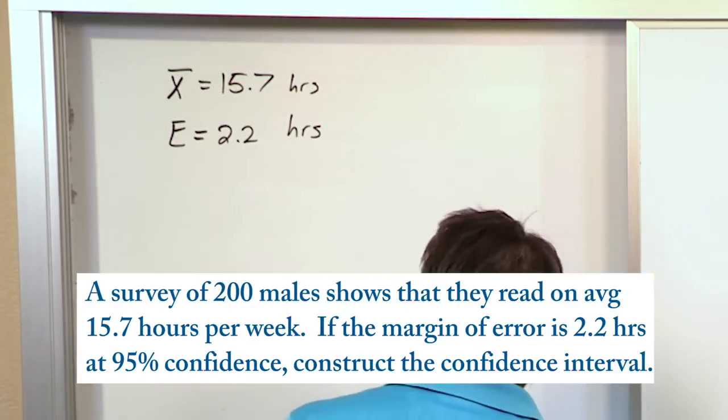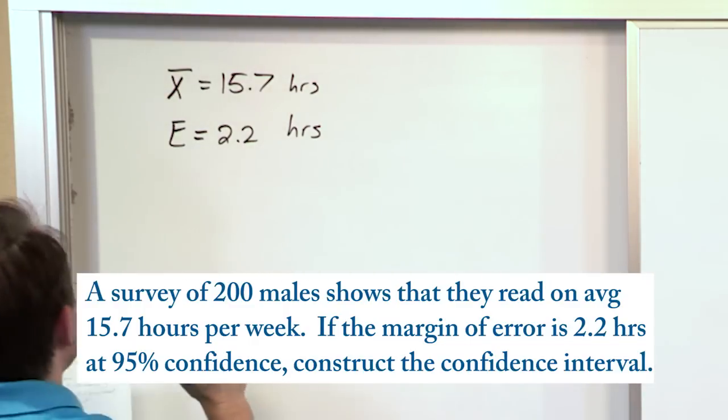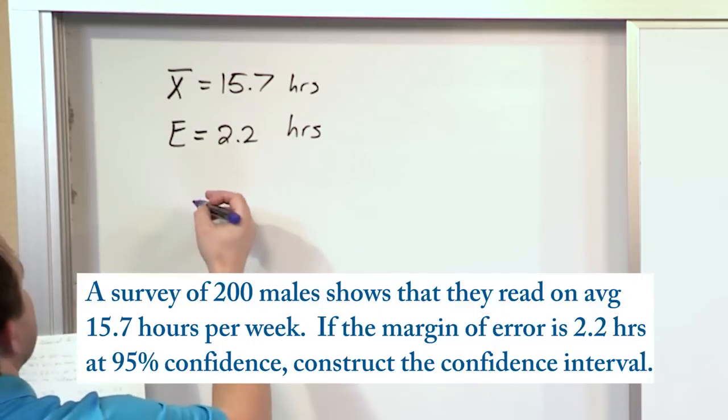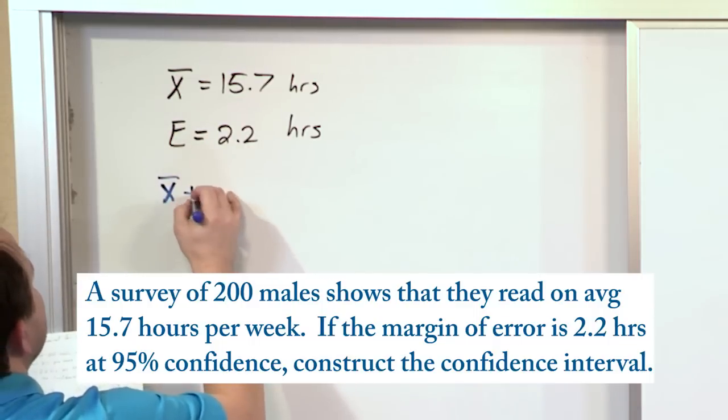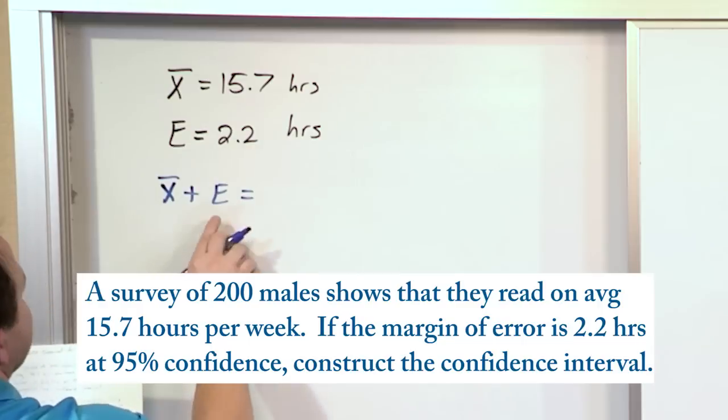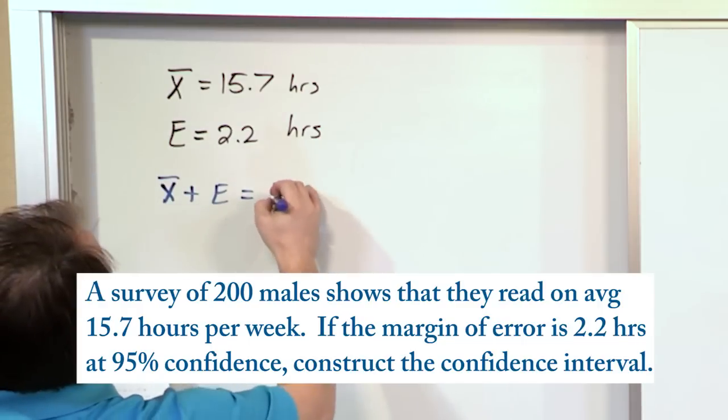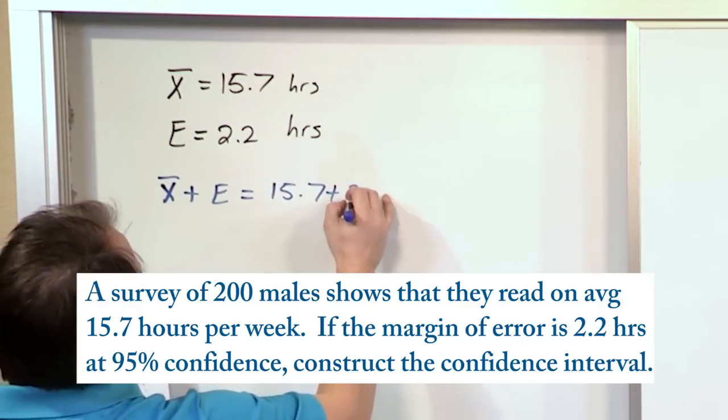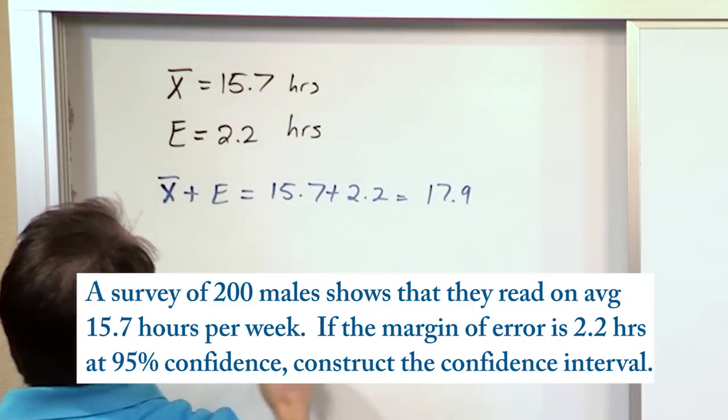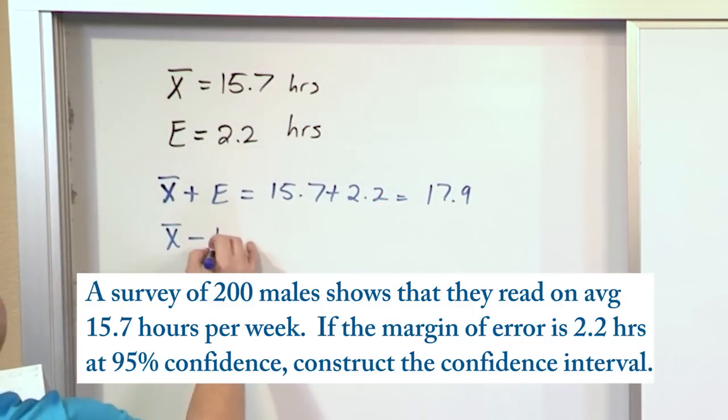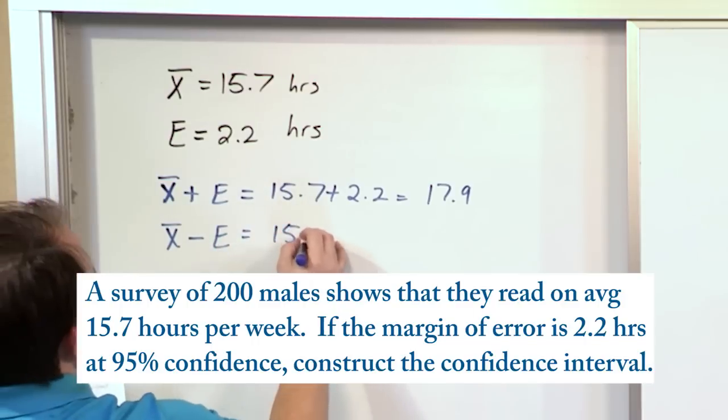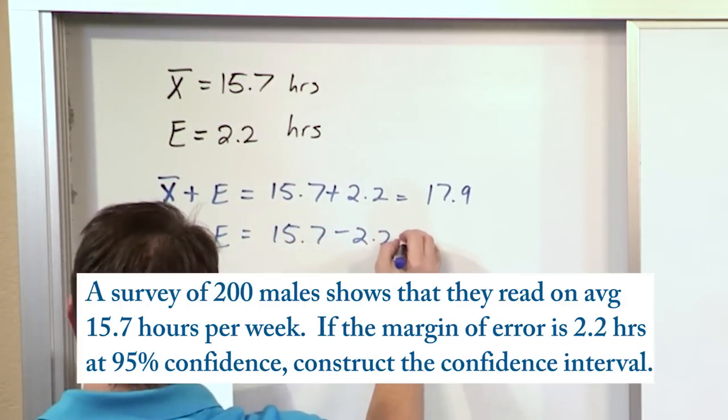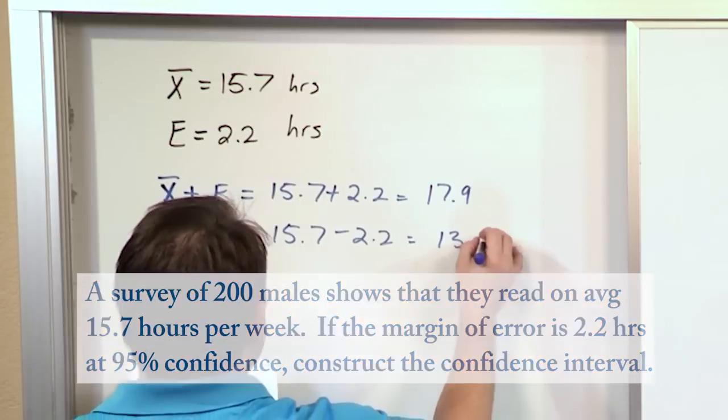Very simple to do, really. Once you understand that the mean plus the margin of error is 15.7 plus 2.2, that will give you 17.9. And the mean minus the margin of error is 15.7 minus 2.2, and you get 13.5.